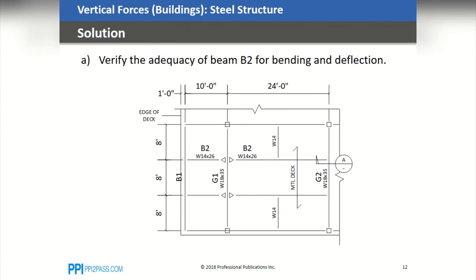Here is the framing plan again, and here is beam B2 that we're checking. The beam size is W14 by 26. As you can see on the left, based on the spacing, the tributary width for this beam is 8 feet. On the top, the beam length is 10 feet at the cantilever and 24 feet at the backspan.